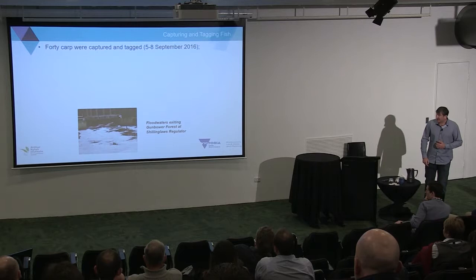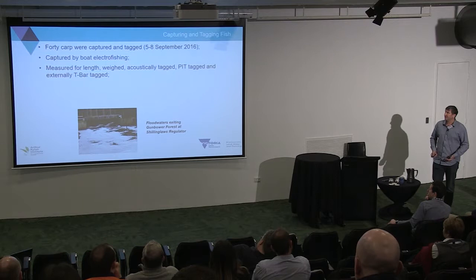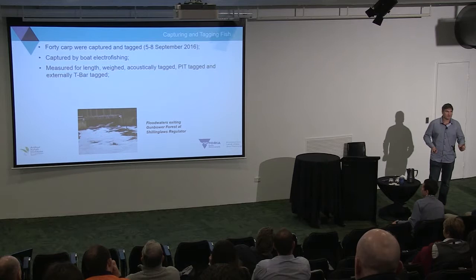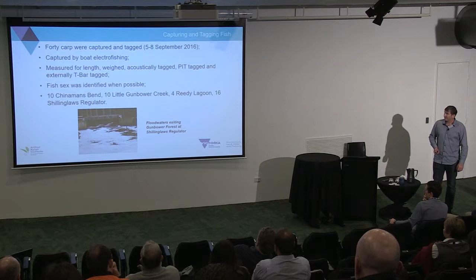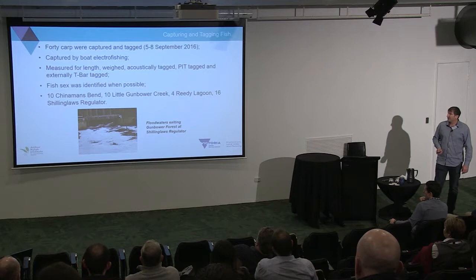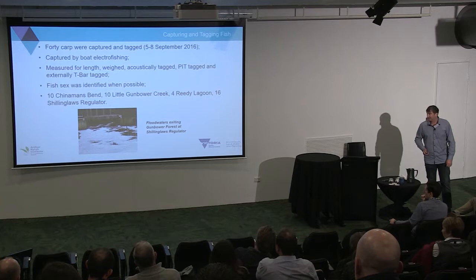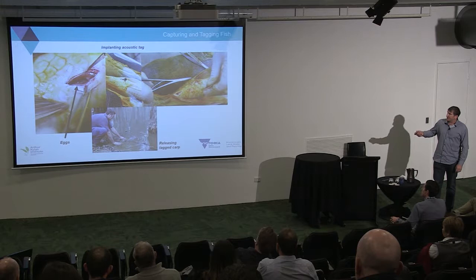We tagged 40 carp in September last year, captured by boat electrofishing. We measured their length and weight, acoustically tagged them, and also inserted PIT tags in case they went through the Torrumbarry Weir fishway. We put in external T-bar tags in case anglers caught them or we recaptured them ourselves, so we'd know it was an acoustically tagged fish. Where possible we identified the sex. We tagged 10 at Chinaman's Bend — that natural outfall — 14 within the remnant wetlands (which were inundated by the time we put them in), and 16 at Schillinglaw's Regulator, one of the main entry-exit locations for the Murray. We cut open the fish, insert the transmitter, stitch it up, and let it go.